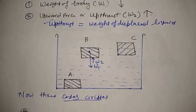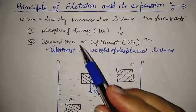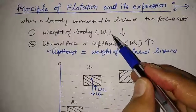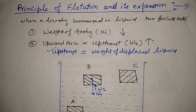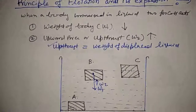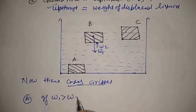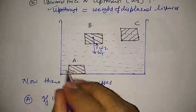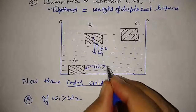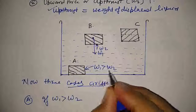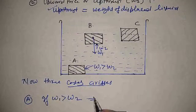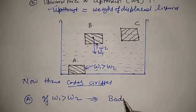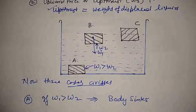For case A: when a body is immersed in a liquid, two forces act — W1, weight of body acting downward, and upthrust acting upward. The first case is when W1 is greater than W2, that is, weight of body is greater than the weight of displaced liquid. In that condition, it is observed that the body sinks in the liquid.